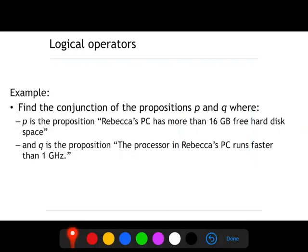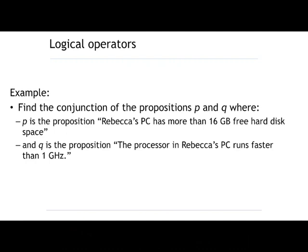Let's check this example. Find the conjunction of the propositions P and Q, where P is 'Rebecca's PC has more than 16 gigs free hard disk space,' and Q is 'The processor in Rebecca's PC runs faster than 1 gigahertz.' To solve this exercise, we just use the conjunction as we saw it in the previous slide. The conjunction would be: 'Rebecca's PC has more than 16 gigs free hard disk space and the processor in Rebecca's PC runs faster than 1 gigahertz.'